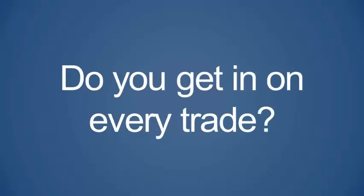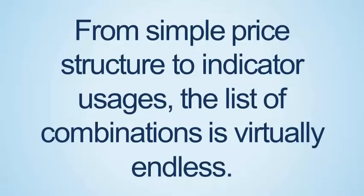Not shown on the chart, price is hitting the 100-period SMA. It's also pulling into a Fibonacci area in a zone that was former support. Do you get in on every trade? No — and that's one of the good things about looking for a few variables to line up. That means less trading. Confluence comes in many forms, and there are many ways and tools you can use to find it.